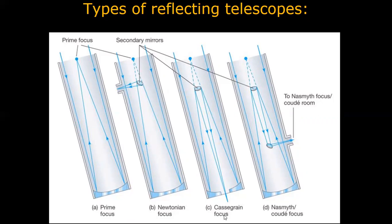In the Cassegrain focus, there is one primary focus point and a secondary focus point, and we keep the eye down below — not up at the top like in the prime focus. In the prime focus we keep the eye up over here, essentially with our back to the object; in the Newtonian focus, the eyepiece is near the side so we look from that direction.